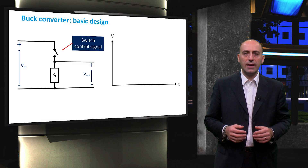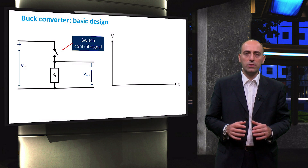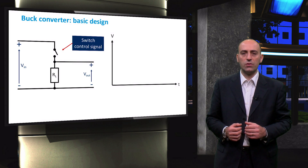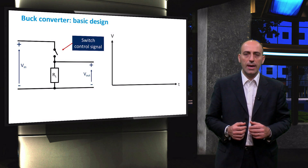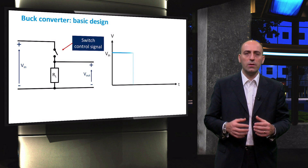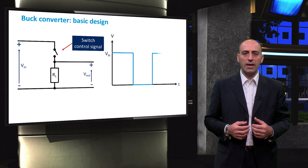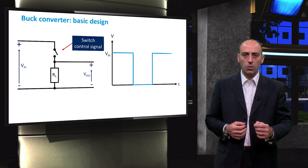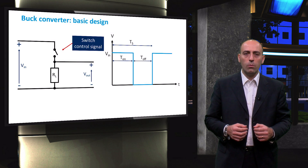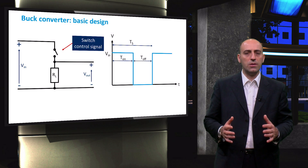In this diagram, the voltage applied at the resistive load is plotted as a function of time. When the switch is on, the input voltage Vin is applied directly to the load, while when the switch is off, the voltage across the load is zero.